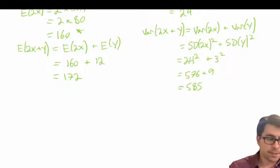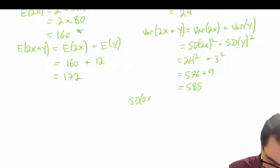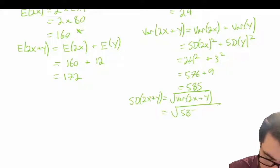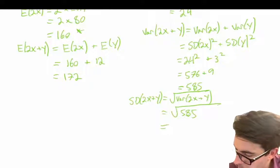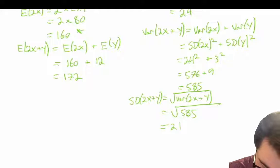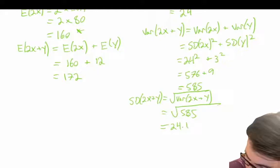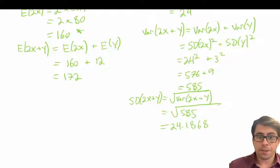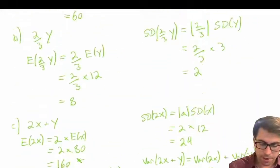So we're not done — we have to solve for the standard deviation. The standard deviation of 2X plus Y is equal to the square root of the variance of 2X plus Y, which is equal to the square root of 585. Units aren't important here because they haven't been specified, but we would still want to be cognizant of our units.